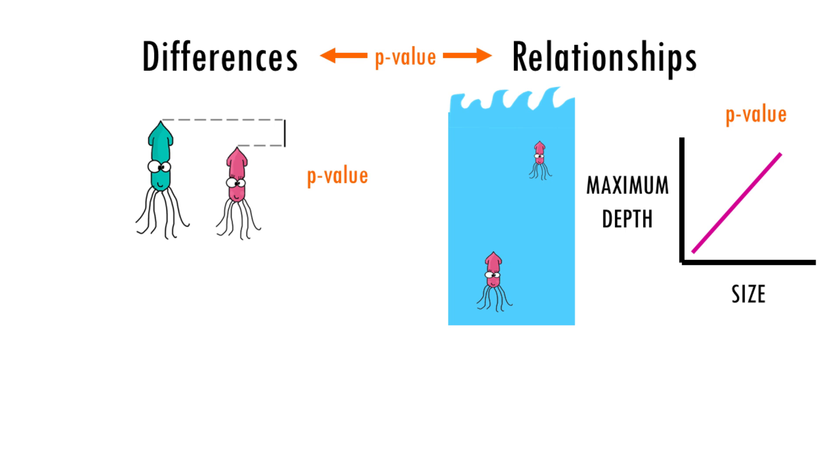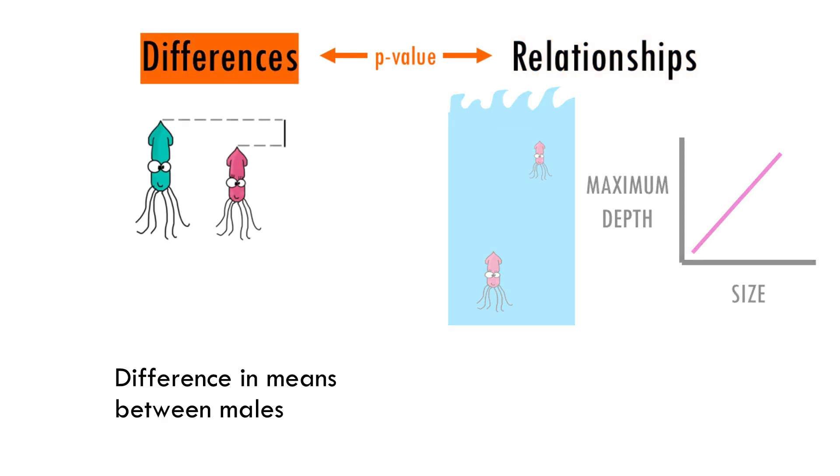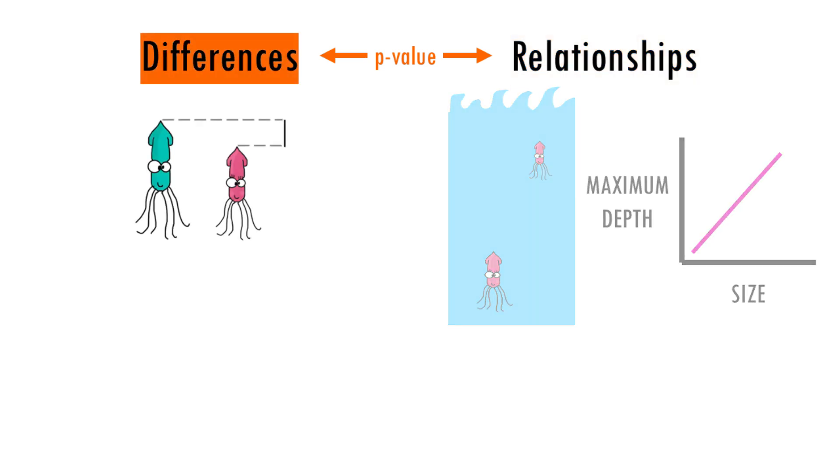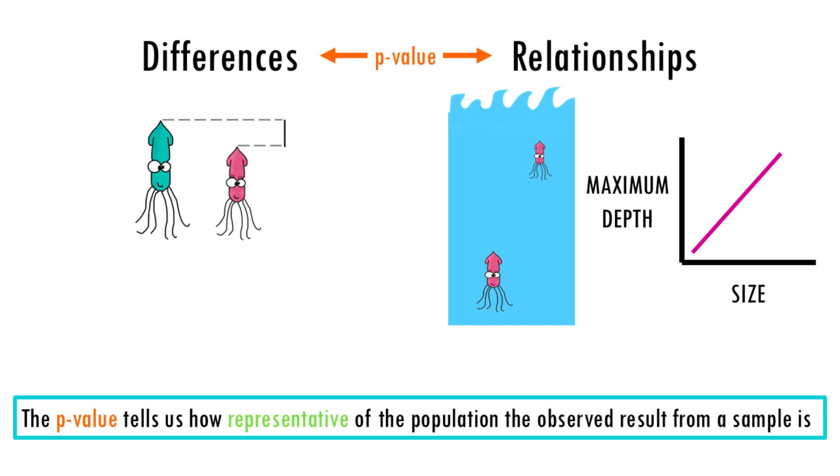So, a linear positive relationship between size and maximum depth and a difference in means of one meter were just coincidences because of the samples we took. But in reality, there is no relationship between size and maximum depth, and there is no difference in means, for example. In simple terms, p-values inform us about how true or reliable, how representative of the population, the result is.